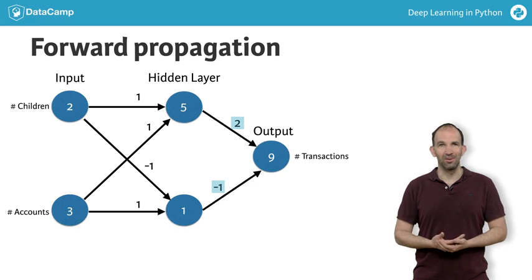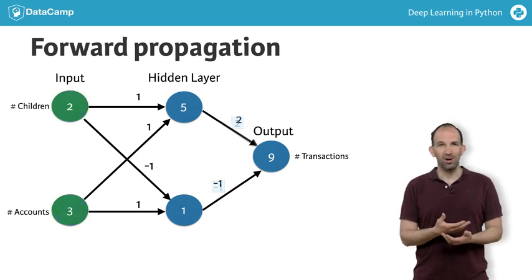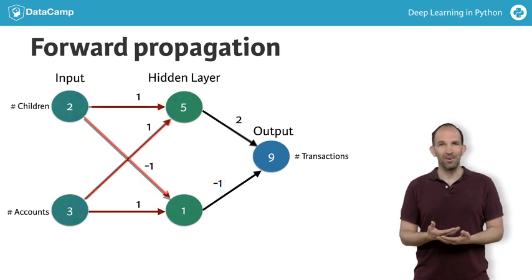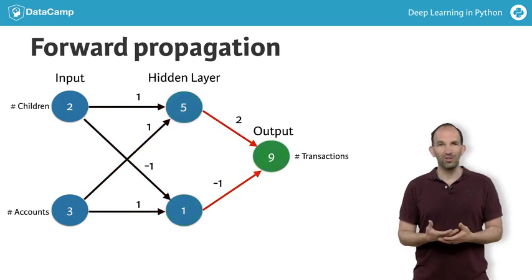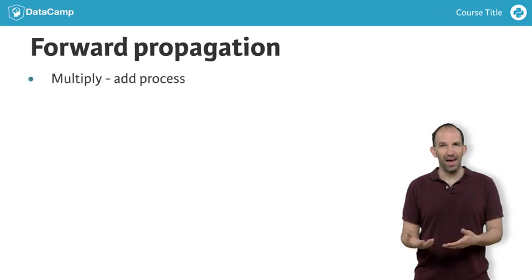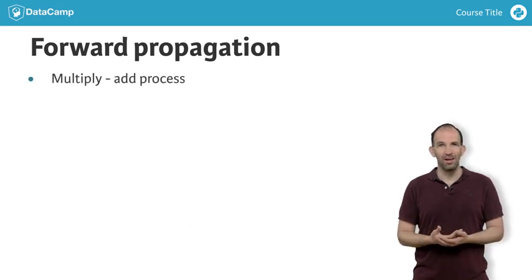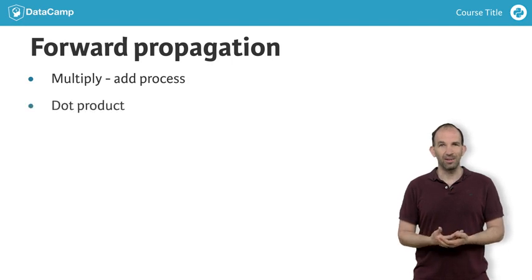That's forward propagation. We move from the inputs on the left to the hidden layer in the middle, and then from the hidden layers to the output on the right. We always use that same multiply and then add process. If you're familiar with vector algebra or linear algebra, that operation is a dot product. If you don't know about dot products, that's fine too.